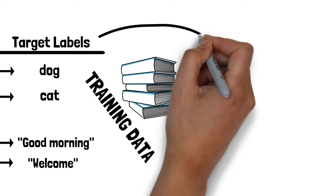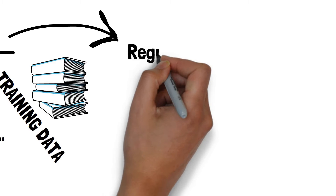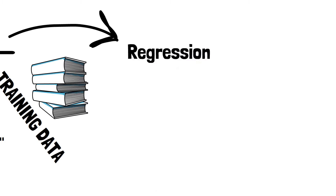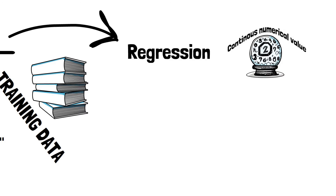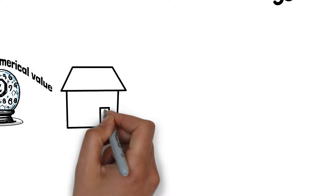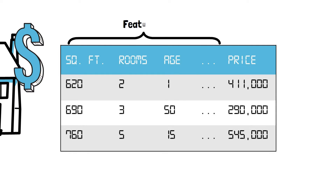Let's take a closer look at the target outputs for our dataset. For regression tasks, things are relatively straightforward. Regression involves predicting continuous values, so the output of our dataset would typically be the expected numerical values themselves. For example, if we're building a model to predict house prices based on various features, the target outputs would be the actual prices of the houses in the training data.